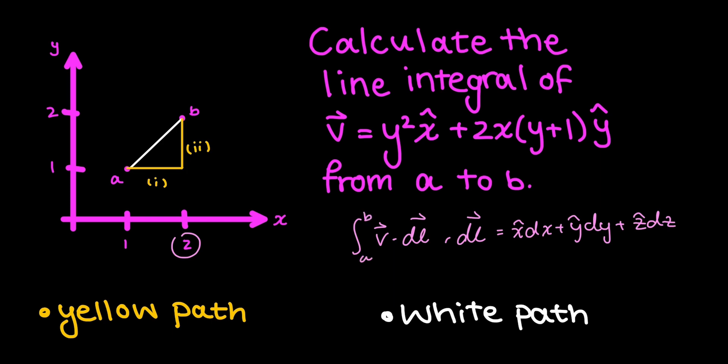If this were a closed loop or closed path where a equals b, I would denote it with a circle. But in this problem, we don't need to worry about that. Let's start by doing the yellow path. The yellow path, as you can see in the figure, has two segments: one and two. We'll evaluate each segment and then sum them up together.